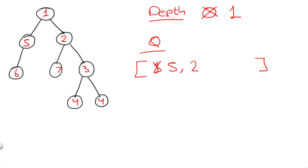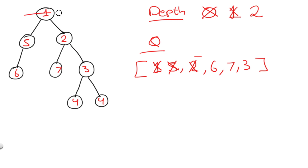Now we have 5 and 2 in the queue. We pop out 5 and add its only child, 6. Then we pop out 2 and add its children, 7 and 3. Now that we've popped out 5 and 2, we increase our depth by 1, making it 2. So first we had 1, then 5 and 2, and now we have 6, 7, and 3. We keep doing that until our queue becomes empty, because at that point we know we've reached the ending.